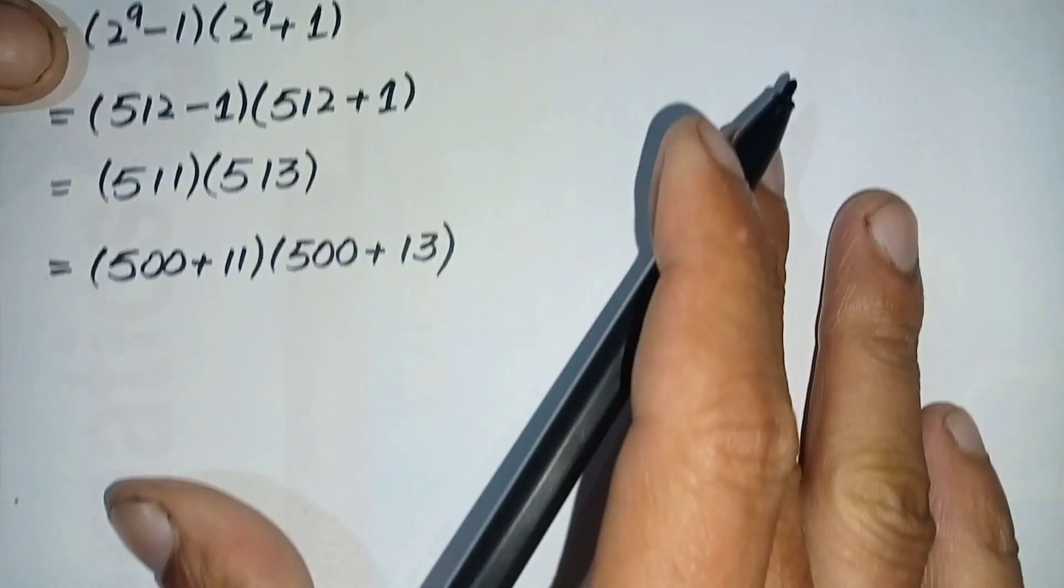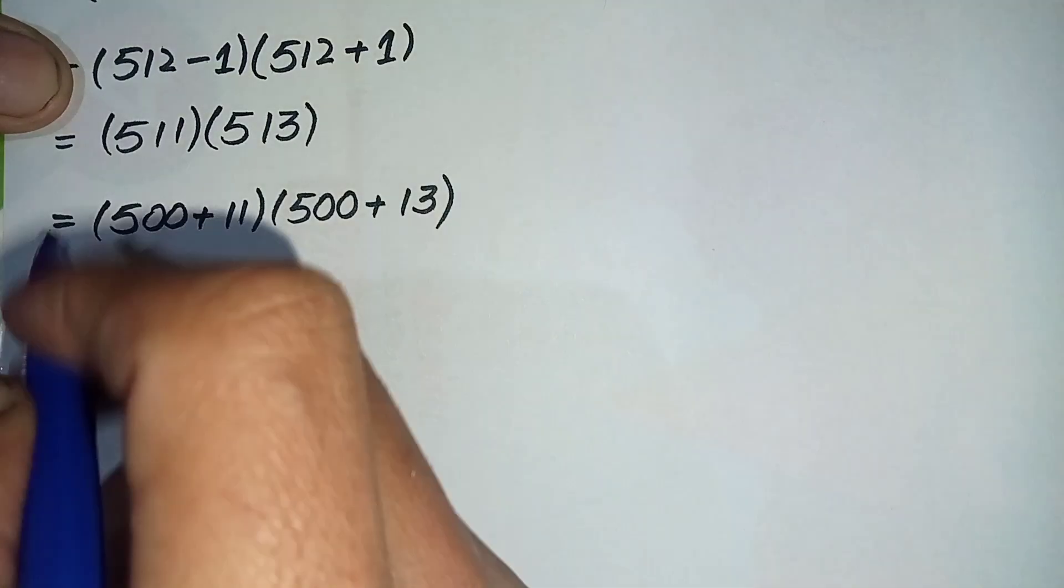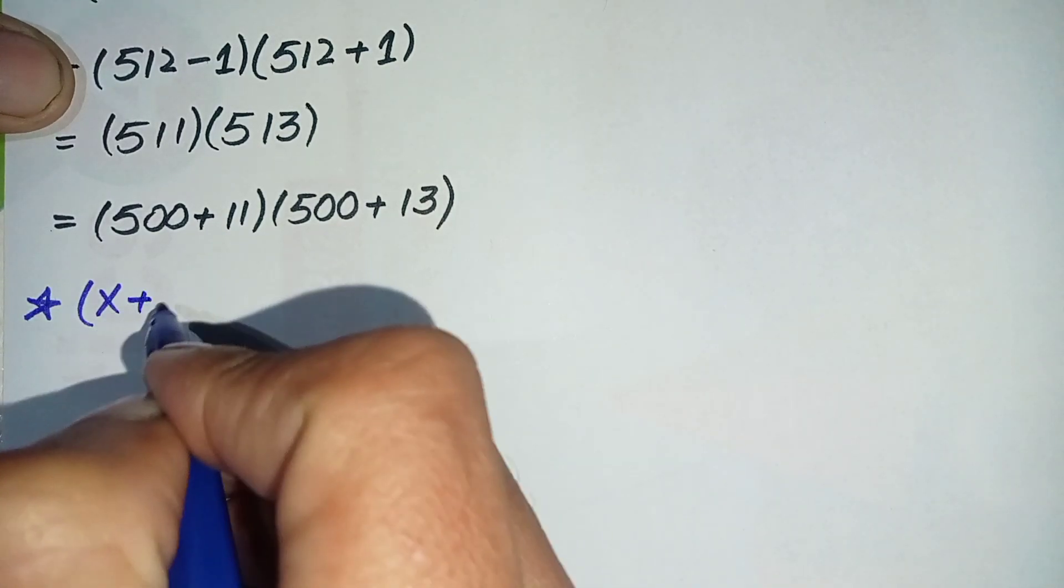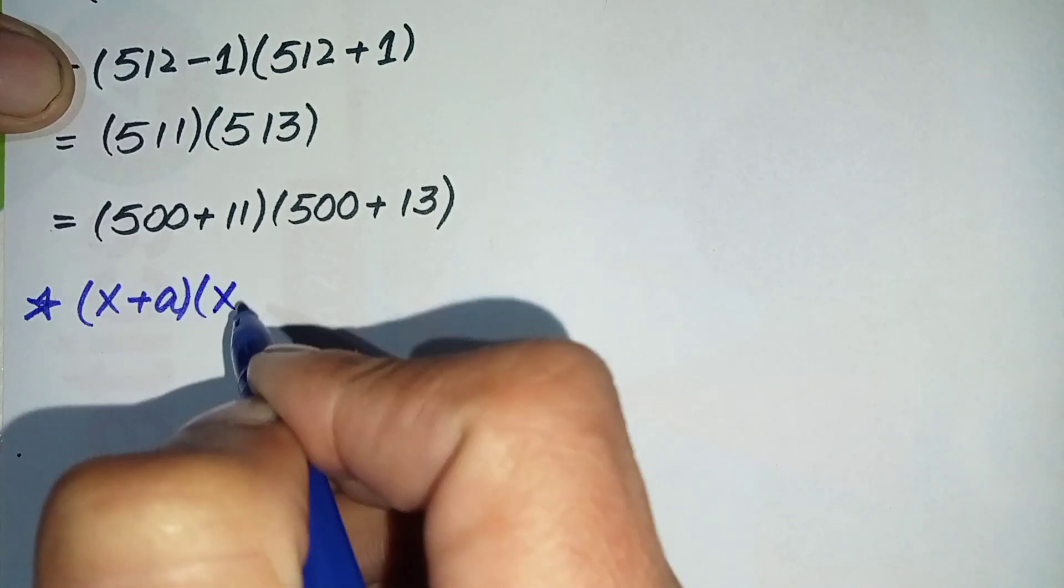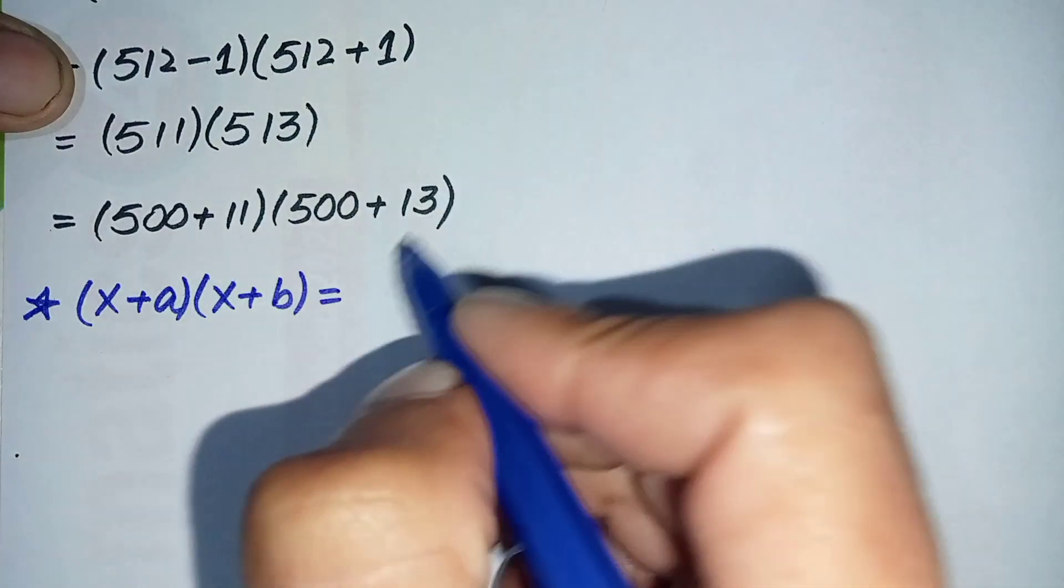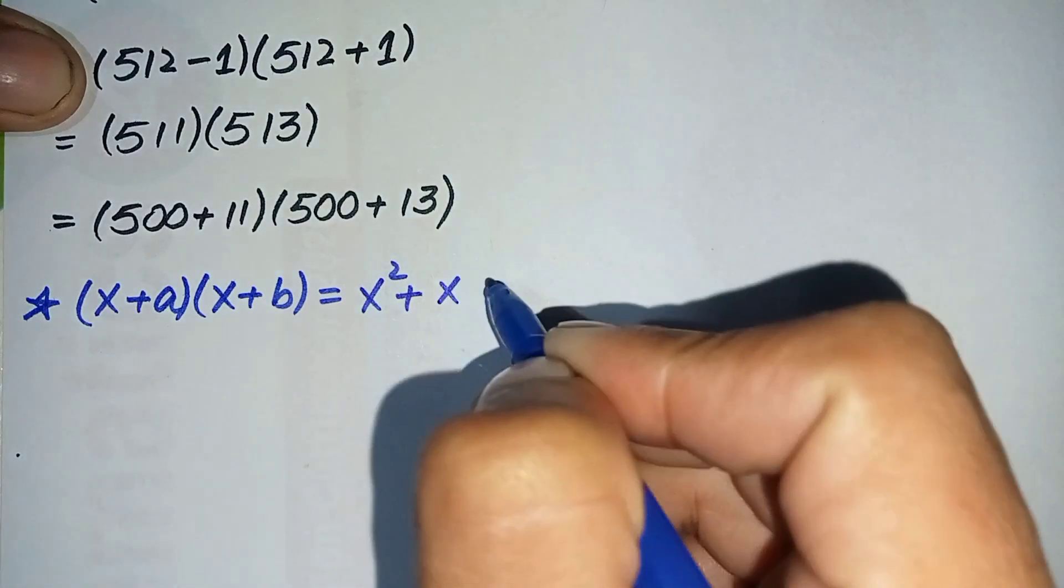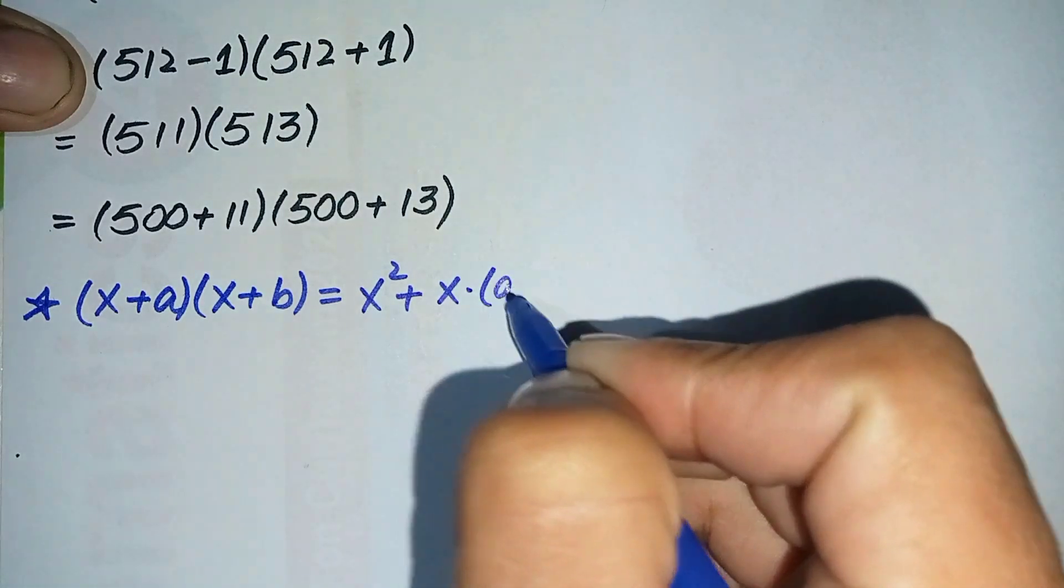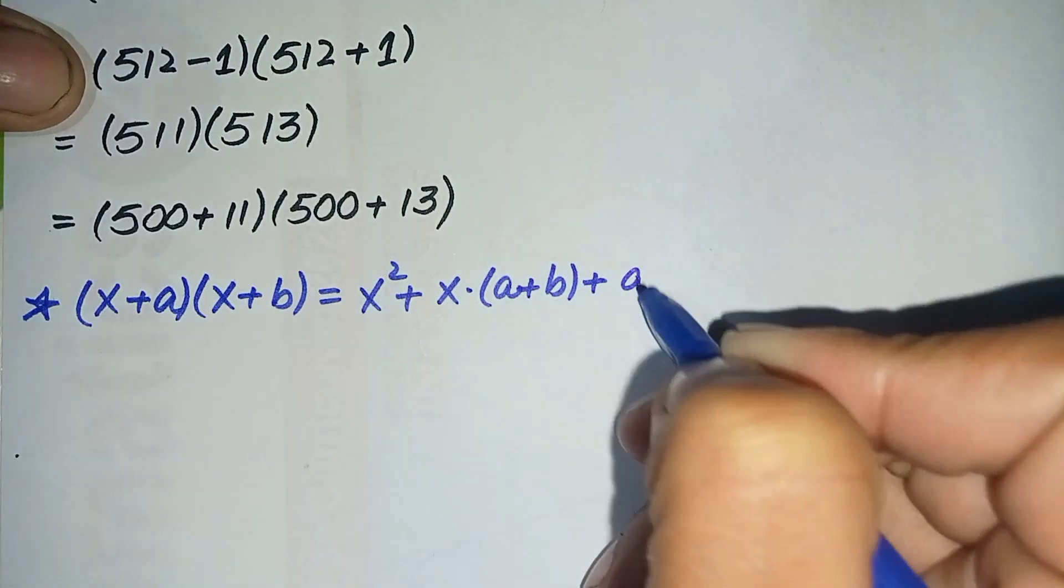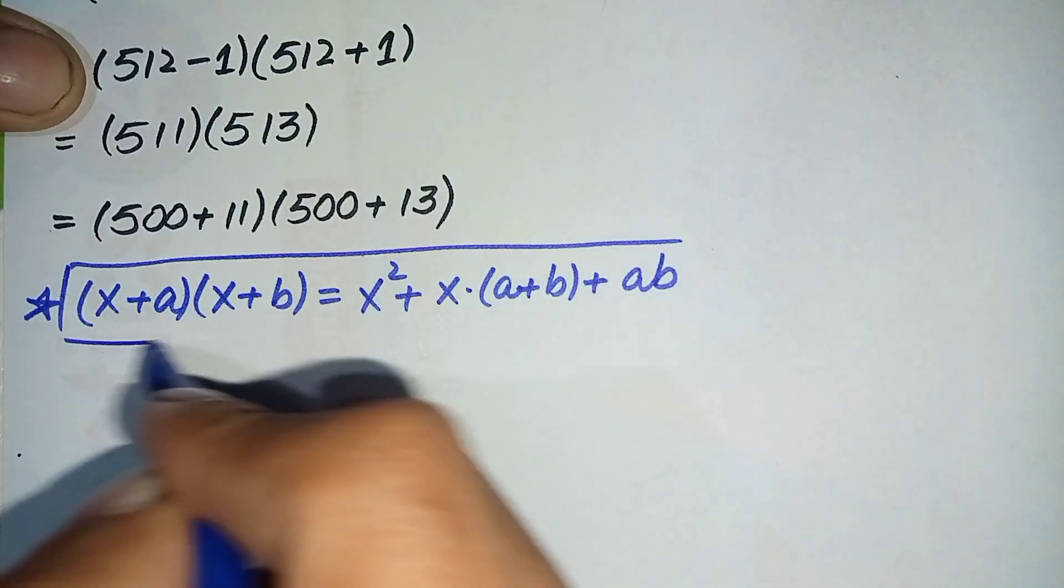Now here in this equation I will use a math property: x plus a times x plus b can also be written as x squared plus x times (a plus b) plus the product of a and b. So by using this math equation, it will become...